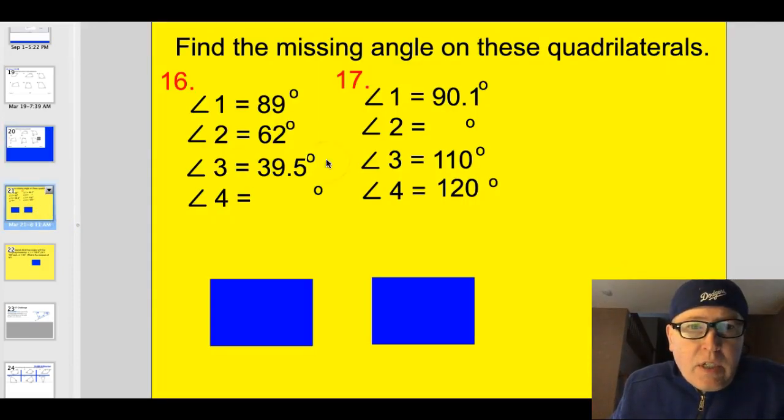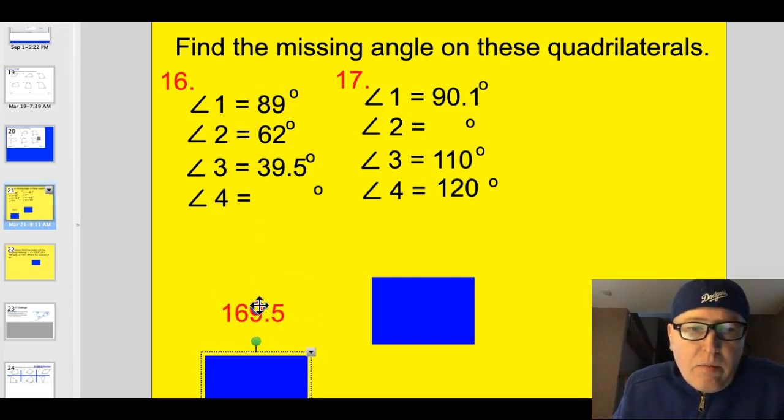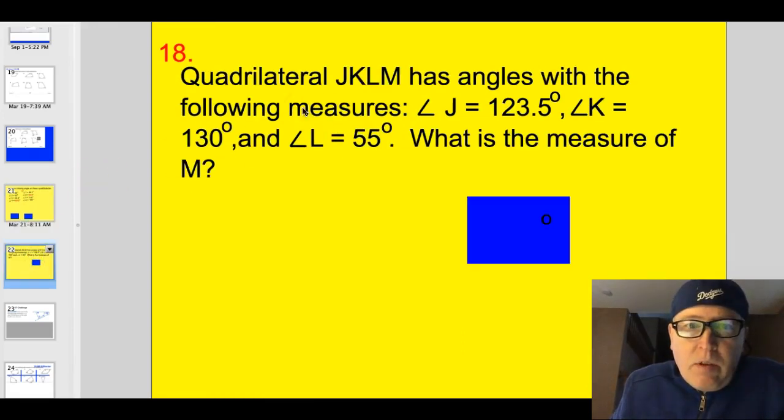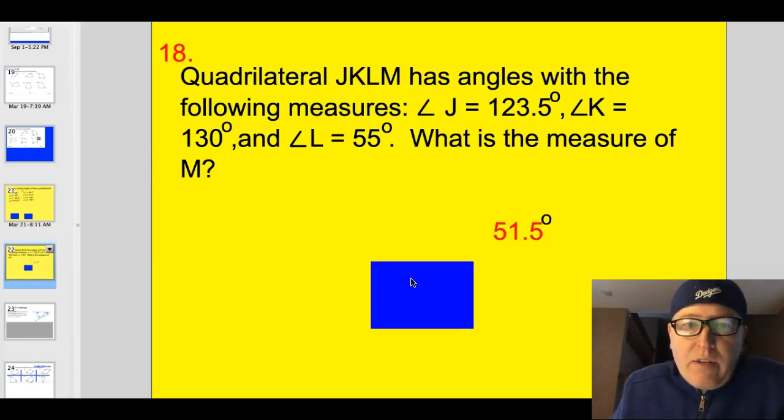All right. Now, 16, 17, and 18. Well, if you add all of these up and you subtract from 360, you would have 169.5 degrees. And on this one here, if you take 360 and subtract all of these angles, you are going to have 39.9 degrees. And this last one, quadrilateral JKLM, angle M is going to be equal to 51.5 degrees.